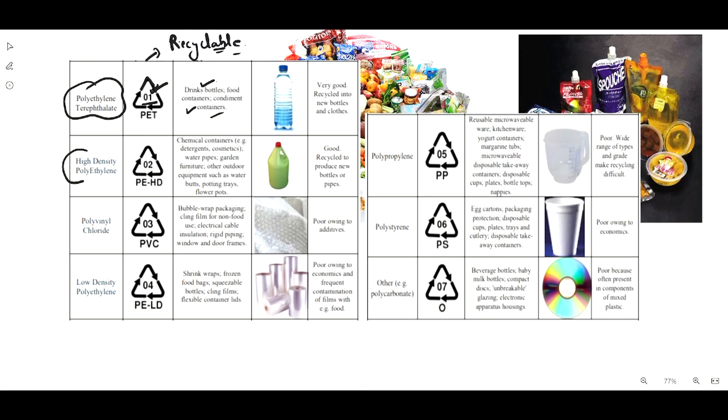Next is high-density polyethylene (HDPE), with code 02, used in chemical containers. Polyvinyl chloride (PVC) comes under code 03 and is used in bubble wrap packaging, rigid piping, windows, and door frames.